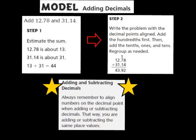Before we begin solving problems in this lesson, I want to talk about some steps we're going to follow when adding decimals. The model question is: we're going to add 12 and 78 hundredths and 31 and 14 hundredths. The first step is to estimate the sum. When you estimate, you're going to round each addend to the nearest whole number and then add to estimate the sum.